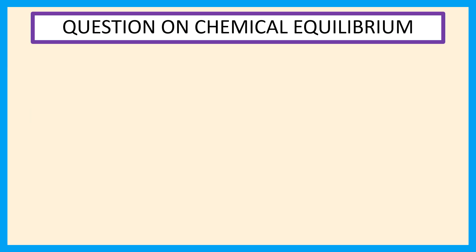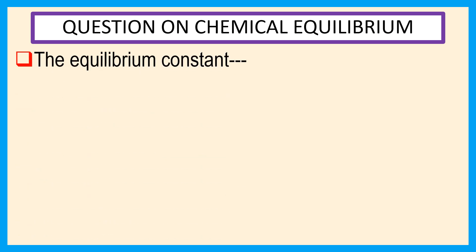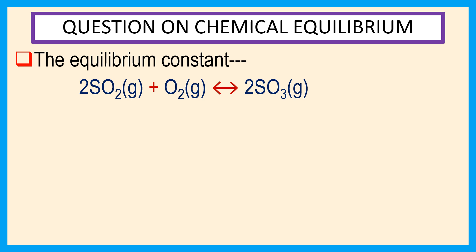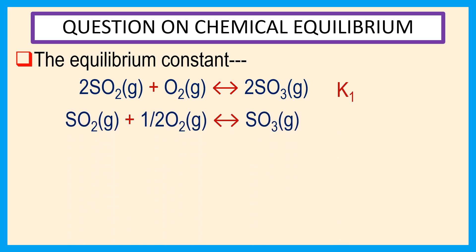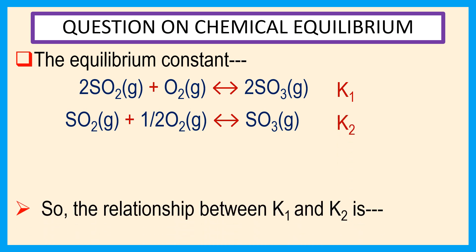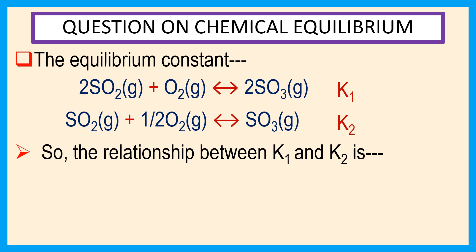Welcome, everyone. Question on chemical equilibrium. The equilibrium constant for the reaction 2 SO₂ gas plus O₂ gas reversible to 2 SO₃ gas is K1. And for the reaction SO₂ gas plus half O₂ gas reversible to SO₃ gas is K2. The relationship between K1 and K2 is: